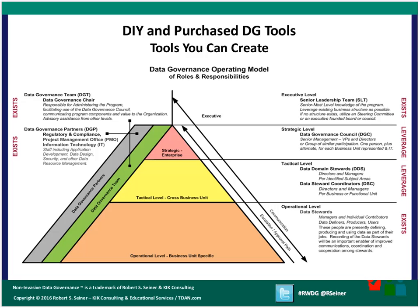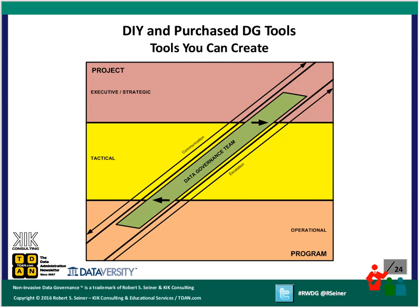The second tool is the operating model of roles and responsibilities. I've shared it before — it aligns with the framework: operational, tactical, strategic, executive, and support roles. My suggestion is don't try to plug your organization into that model; try to take the model and overlay it over your organization. Another view of the data governance operating model has a time component — while the project of defining the program is starting, the emphasis is on the executive level, but when it comes to delivery, the emphasis is really at the operational level.